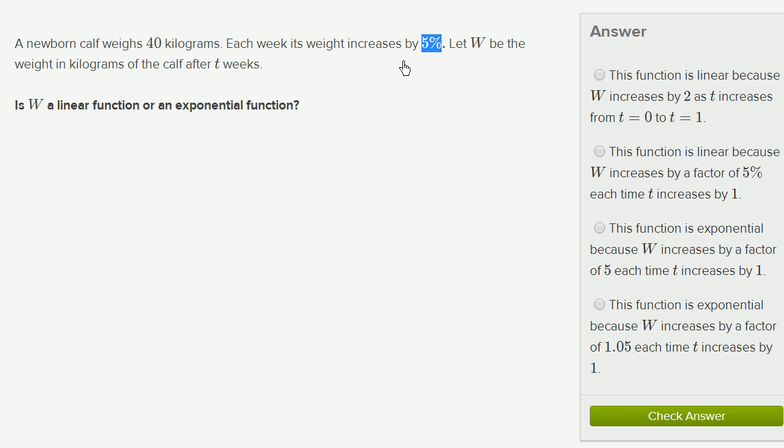So because we have that growth by a factor, not just by a constant number, that tells us this is going to be an exponential function. So let's see which of these choices describe that. This function is linear. No, we don't have to even read that.